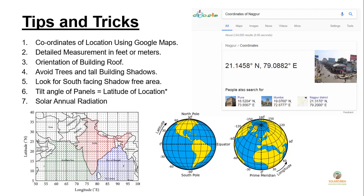I have made tips and tricks for site analysis, so please note them down. First, check the coordinates of the site location using Google Maps. For example, I have searched the coordinates of my city Nagpur. The latitude of Nagpur is 21.14 degrees and longitude is 79.08 degrees. Lines going vertical on the earth are latitude and lines going horizontal across the earth are longitude. Latitudes will be useful for determining the tilt angle of solar panels.